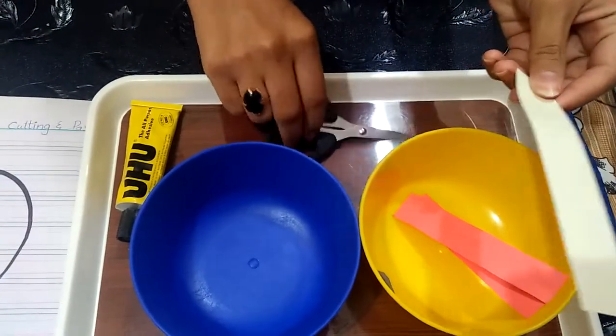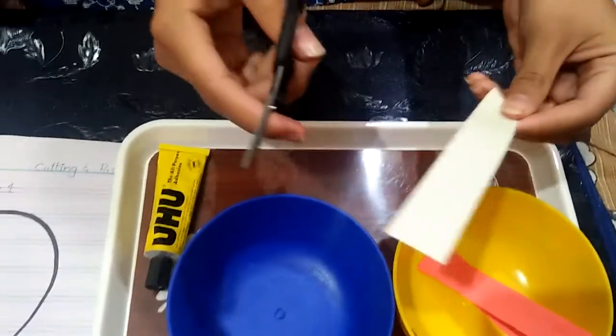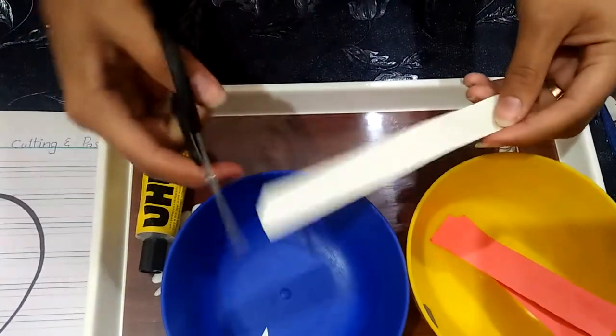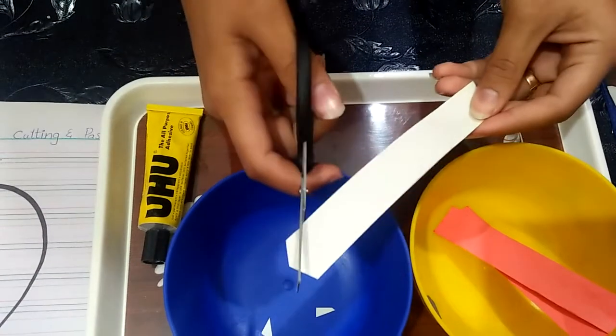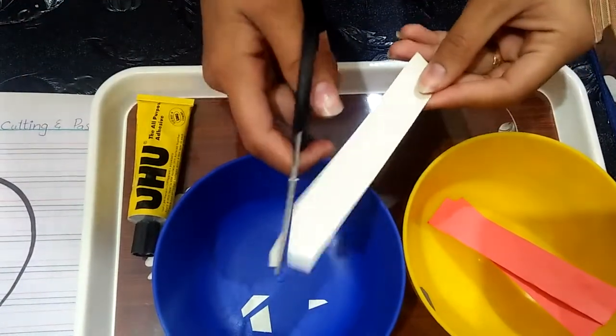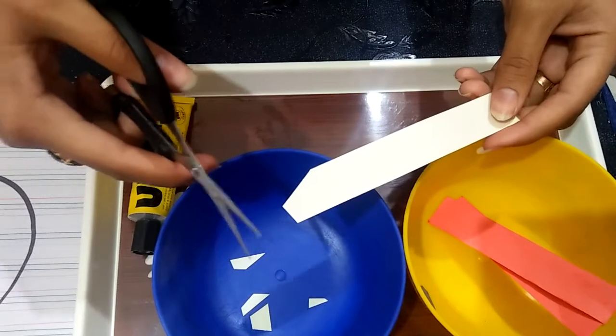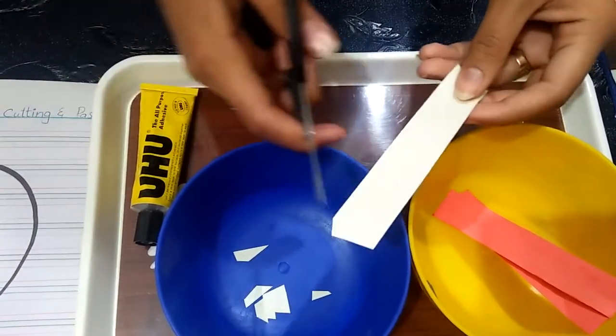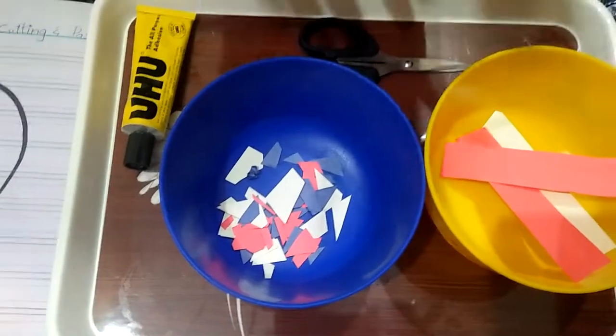You will take one strip in your left hand and a scissor in your right hand, and you will cut it in any shape. Well, okay, like this. Remember that it is a free hand activity. Let the child cut it in any shape.